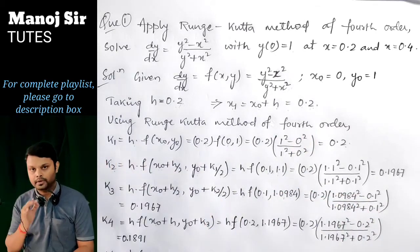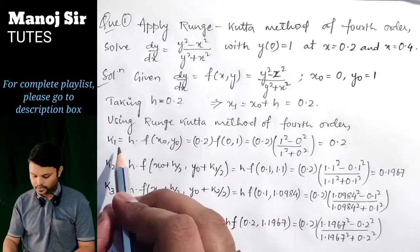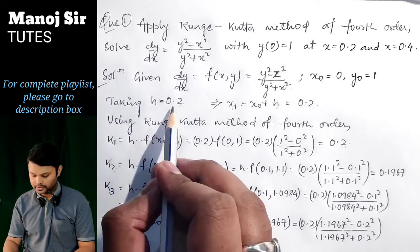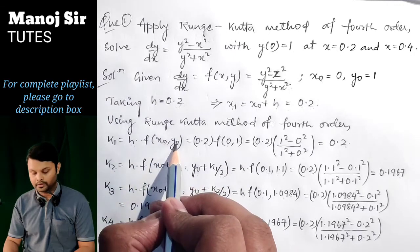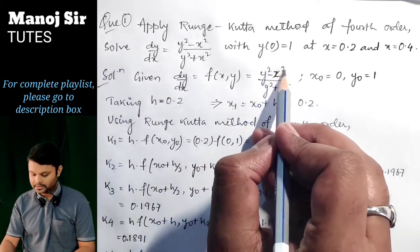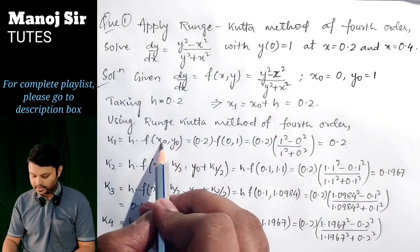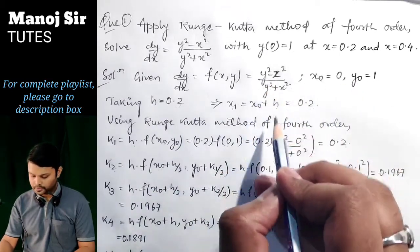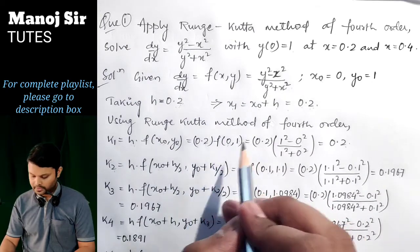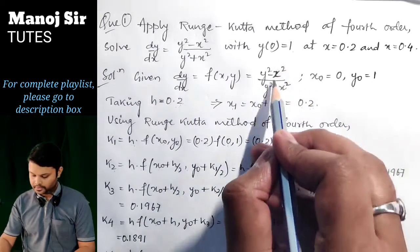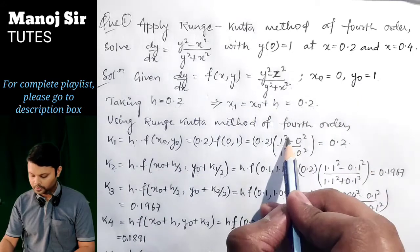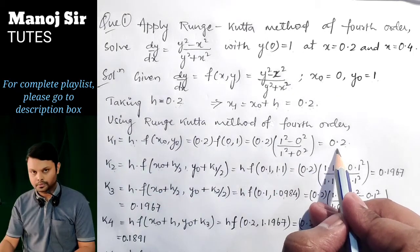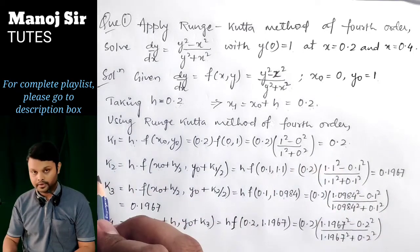Using the Runge-Kutta method of fourth order, we find k₁, k₂, k₃, k₄. k₁ = h·f(x₀, y₀) = 0.2 · f(0, 1). The function is (y² - x²)/(y² + x²), putting x = 0 and y = 1 gives (1 - 0)/(1 + 0) = 1. So k₁ = 0.2 × 1 = 0.2.